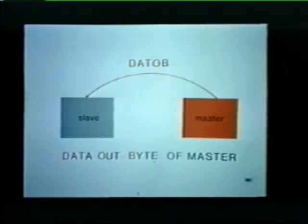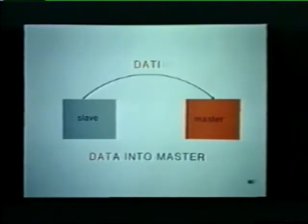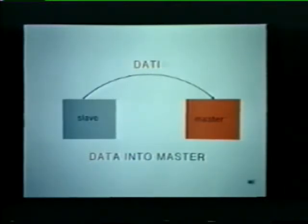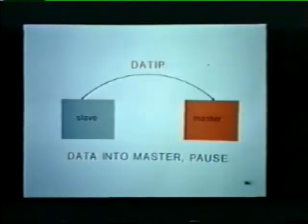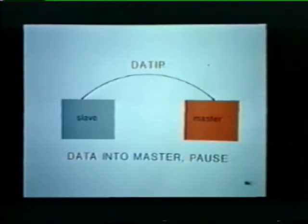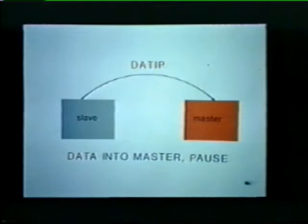Now let's look at input transfers. Here you see data being transferred into the master device — hence the name Data I. It's true that the information is coming from the slave, but remember this key point: all transfers are in relation to the master device. The last of the four types is the Data IP. You again see data being sent into the master device, similar to a Data I. However, in this case, we indicate a pause after the transfer and call this transaction a Data IP. This pause has to do with the characteristic of destructive readout devices such as core memories.